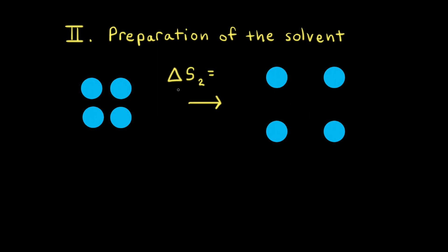Next, let's think about the change in entropy, delta S-2, for this second step. When the water molecules are pulled apart, there's an increase in the number of possible positions of the water molecules. And like the first step, an increase in the number of possible positions means an increase in the number of microstates, which means an increase in entropy. Therefore, delta S-2 is positive.